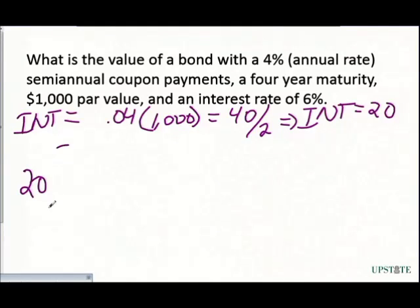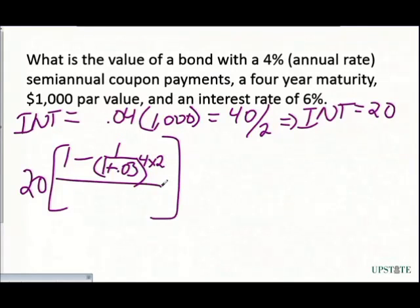So we have our $20, which is then multiplied by the rest of this half of the annuity on these fixed payments. And then we use that interest rate inside, which is going to be 0.03. It's that 6% divided by 2, and this is going to be raised to the 4-year maturity multiplied by 2, also divided by 0.03.